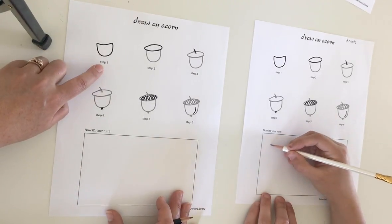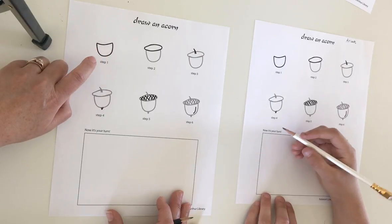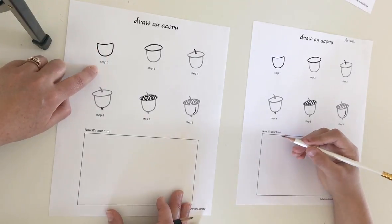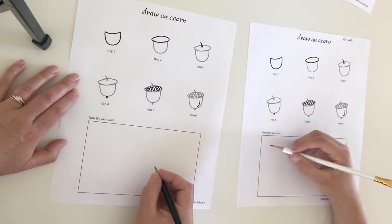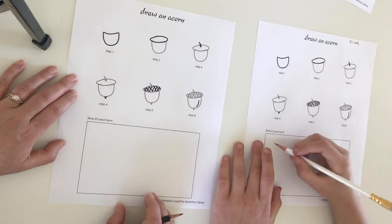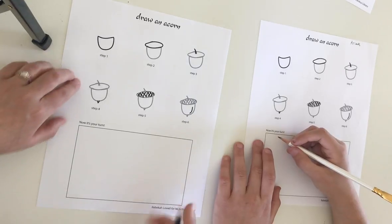Here I have everything labeled, and you should be able to download this PDF if you want to also draw along, or draw on a piece of scrap paper if you don't have it. So either way, step one.